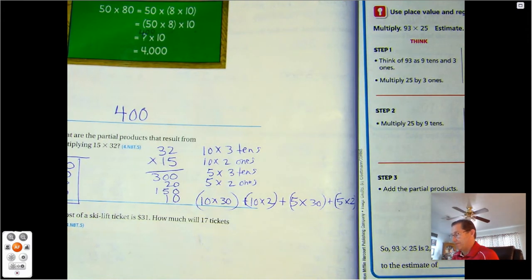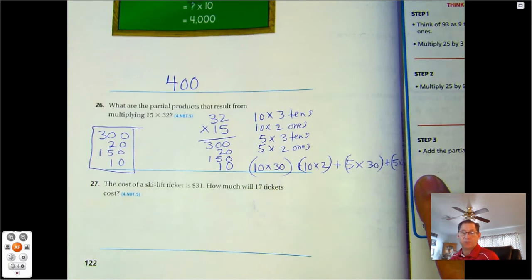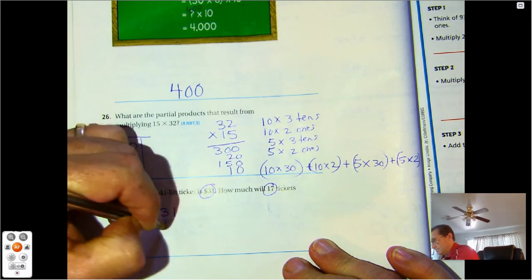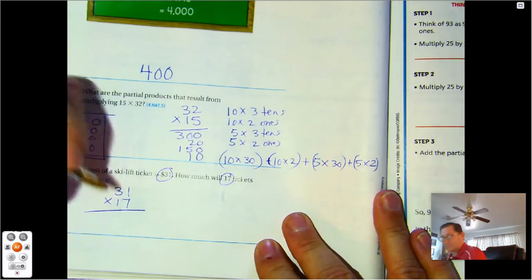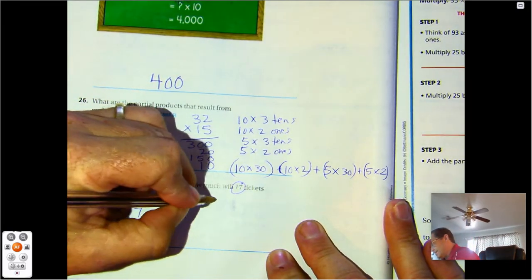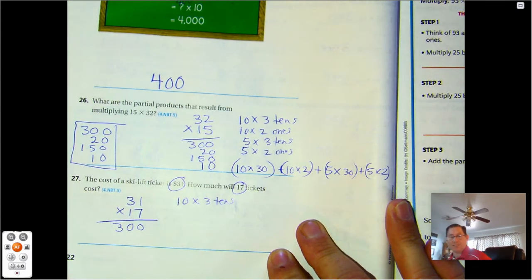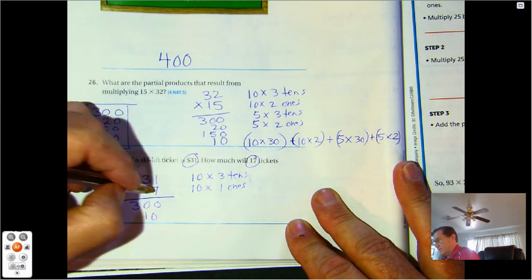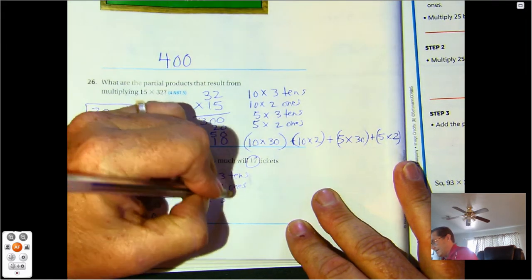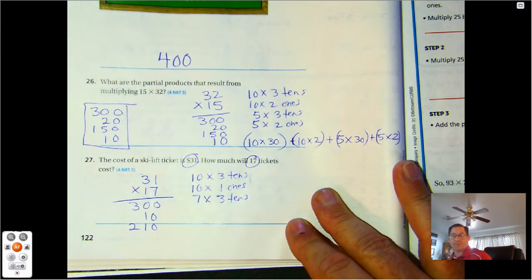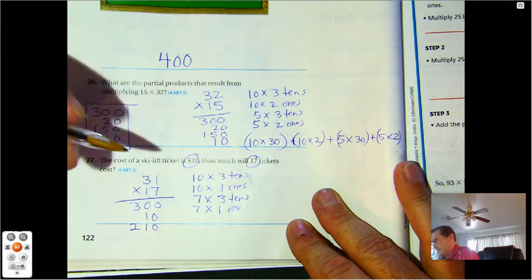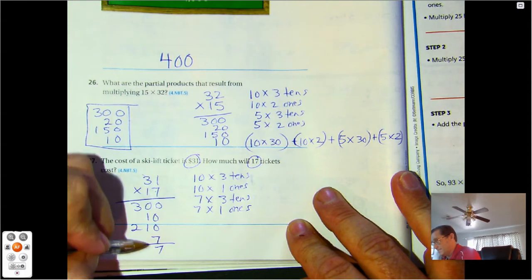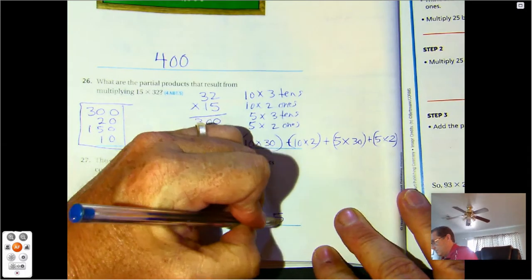Number 27. The cost of a ski lift ticket is $31. How much will 17 tickets cost? So 31 times 17. We have 10 times 3 tens, so 30 tens, which is 300. 10 times 1 one is 10. 7 ones times 3 tens gives us 21 tens, which is 210. And 7 times 1 is 7. Add up our place value columns. We get 7, 20, and 500. So they will cost $527.